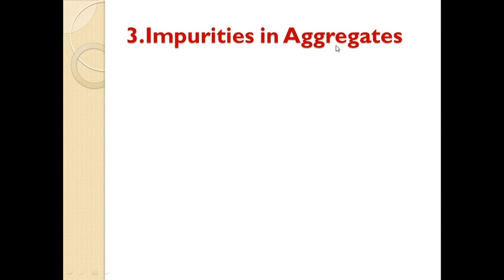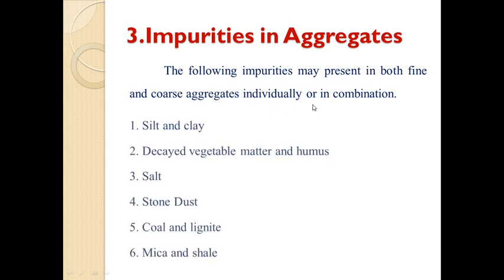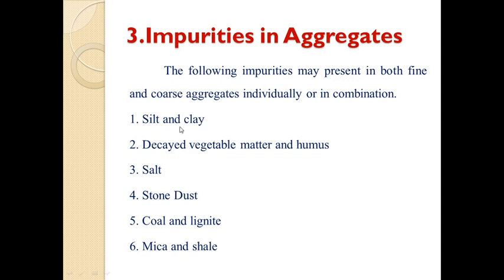Inorganic impurities mainly contain silt and clay, which can be easily removed by washing the sand. The following impurities may be present in fine and coarse aggregate individually or in combination: silt and clay, decayed vegetable matter, water and humus, salt and humus salt, stone dust, coal and lignite, mica, and shell.